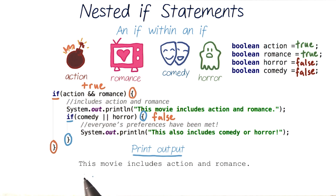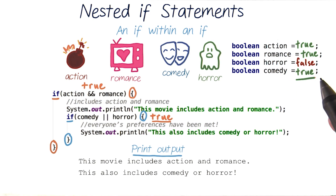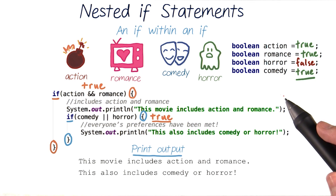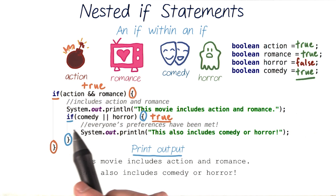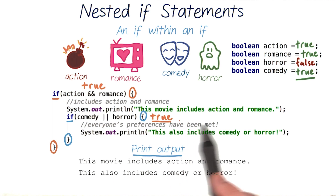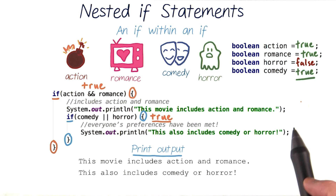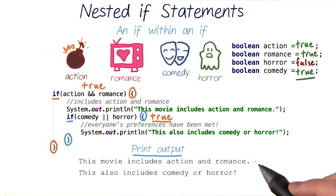All that will print out is 'this movie includes action and romance.' Now let's change our comedy variable so that it's true. We'll still enter our first outer if and print out 'this movie includes action and romance.' Then our inner if checks if either comedy or horror is true. This time comedy is true, so we'll enter the inner if and also print out 'this also includes comedy or horror.' Our print output will be those two lines of text.